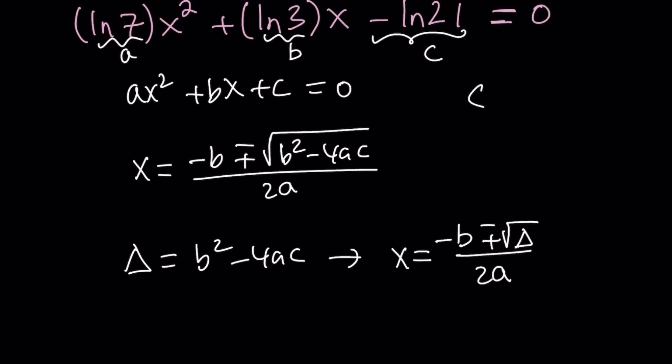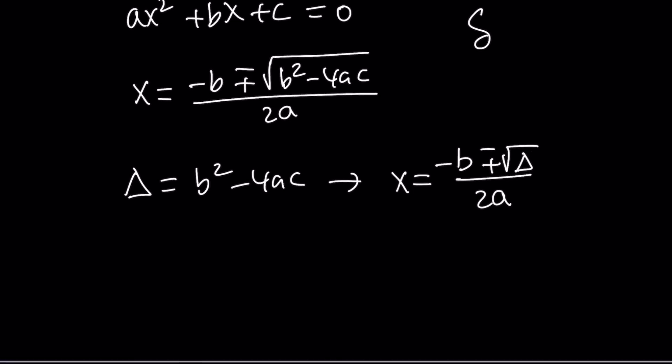The lowercase delta, if I'm not wrong, it looks like this, which is kind of weird because it doesn't look like a triangle, right? Well, it sort of does. If you squish it, maybe you can turn it into a triangle. Anyways, it's just Greek letters, okay?